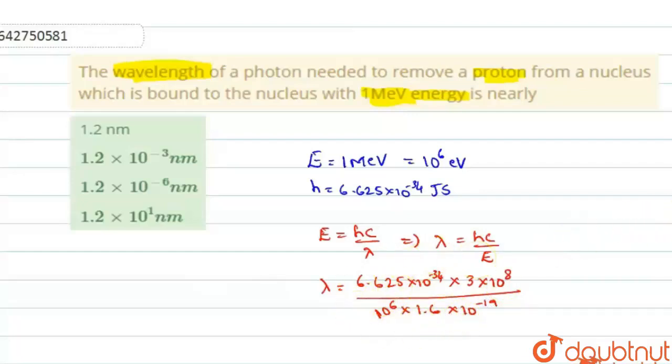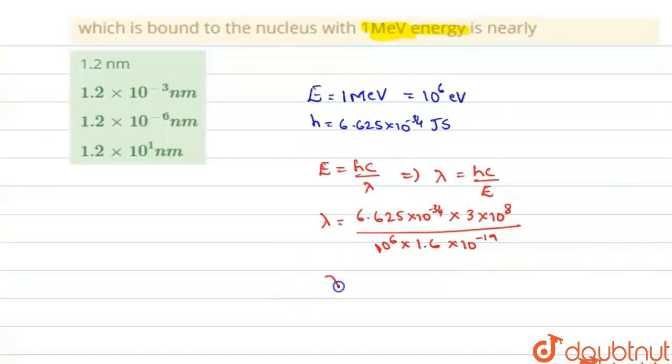So when you simplify this, you can find out the value of lambda. The value of lambda will be equal to 1.24 × 10^-3 nanometers.